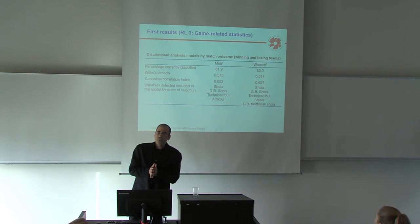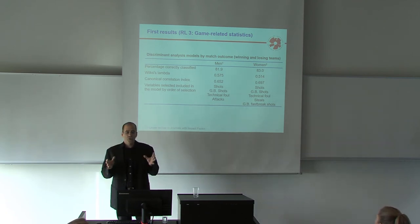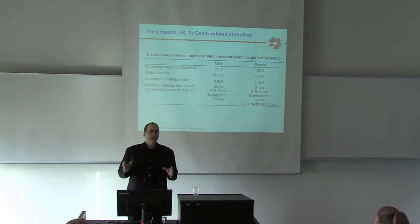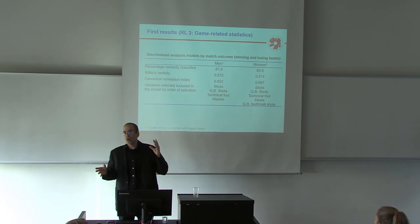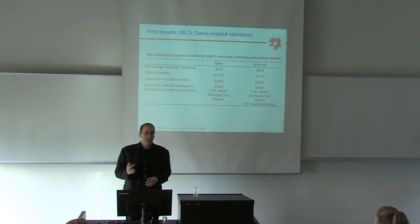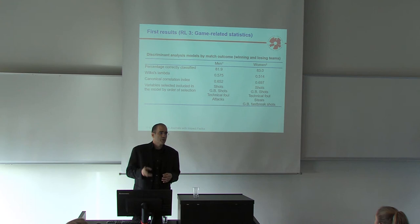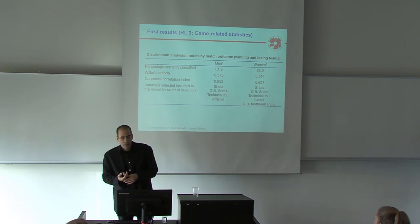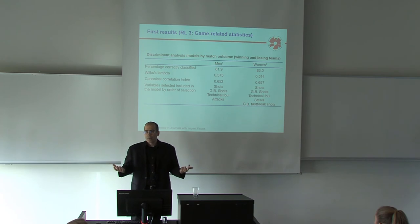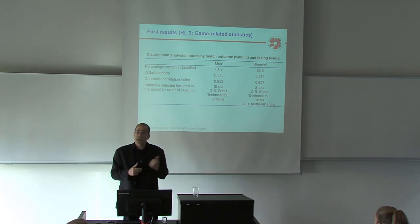We have done two discriminant analyses to know what is the predictive variable between winning and losing teams in Olympic games. In this moment, these two manuscripts are under review in journals with impact factor. In male, the variables predictive of the performance, understanding performance winning and losing team, is shot, goalkeeper shot, obviously. But more interesting is technical foul and attacks in men.